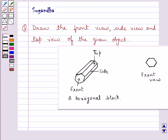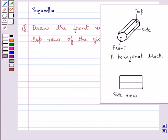Now let's see the side view of this hexagonal block. This is the side portion of this hexagonal block and this shows the side view of this block.